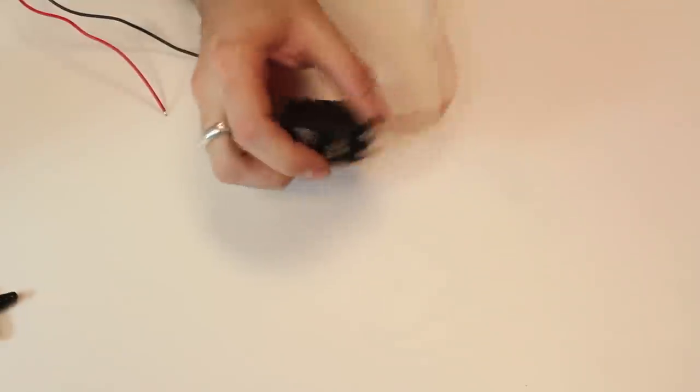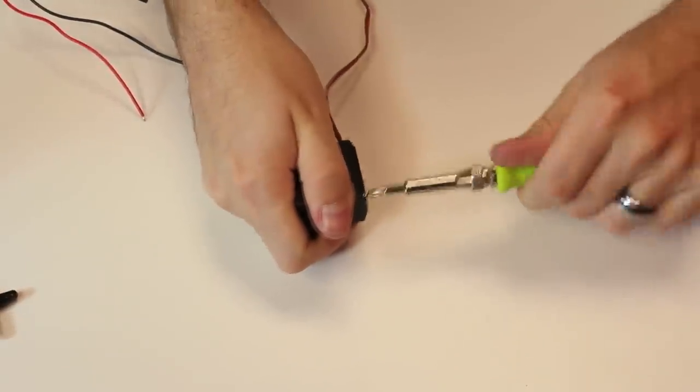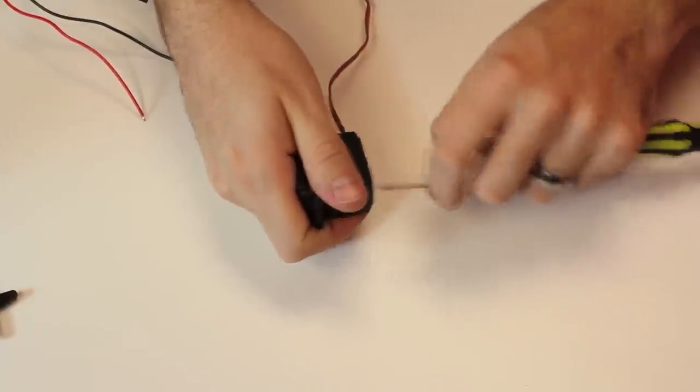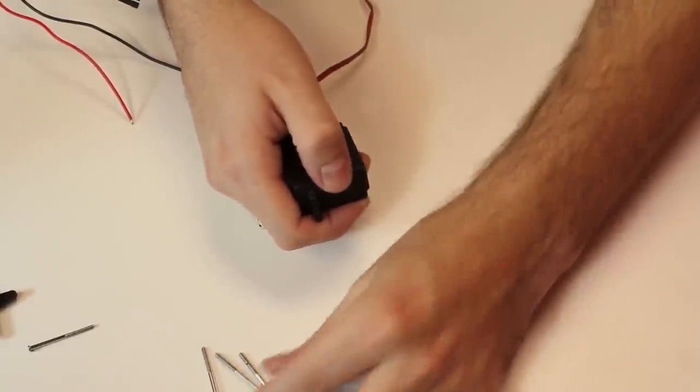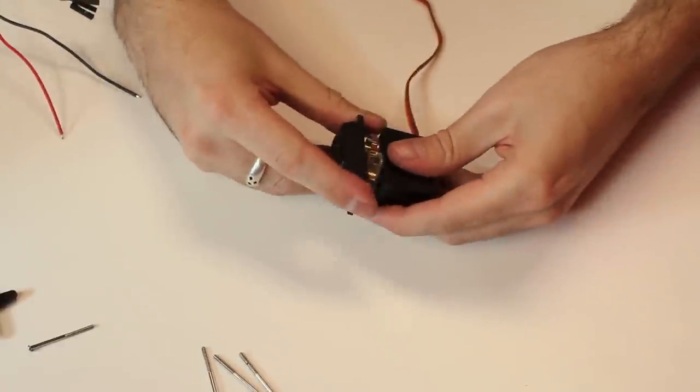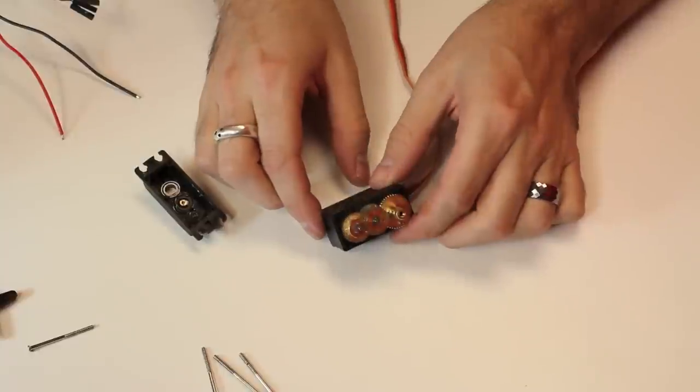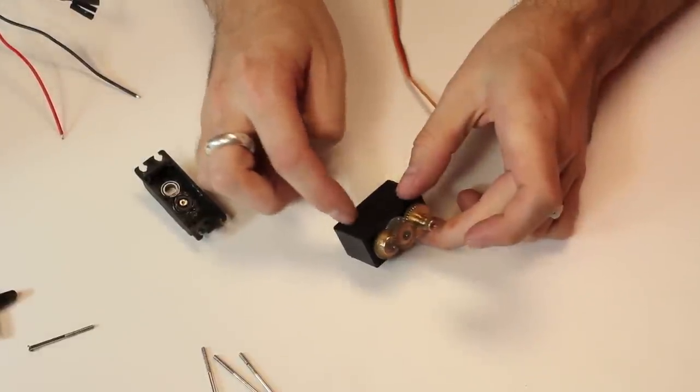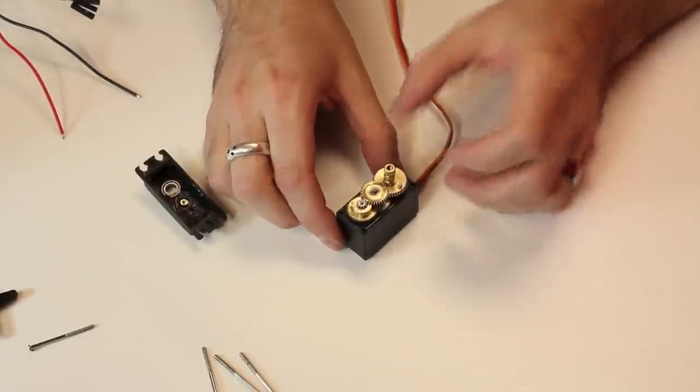So we're going to take this off. And then, of course, we've got four screws on the bottom. We're going to take these out. And these are also pretty long. They run the whole length of the case. Okay, so we've got this last screw out. And what we're going to do is we're actually going to pop off this top.